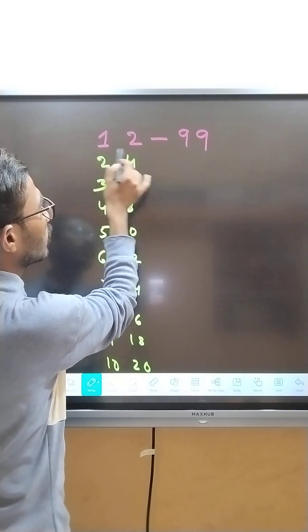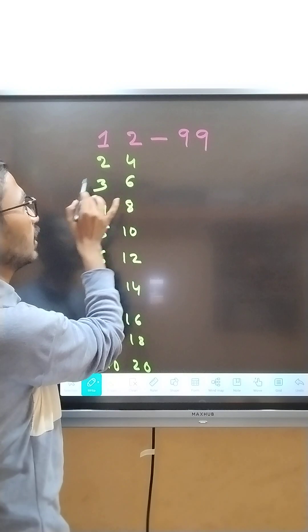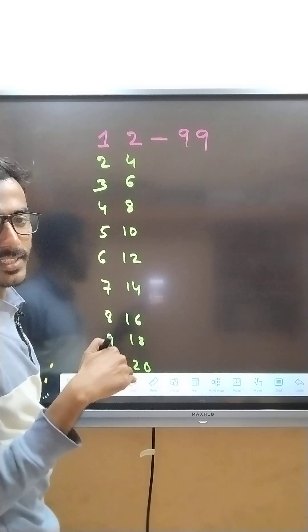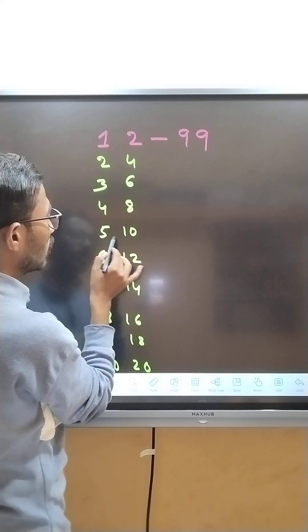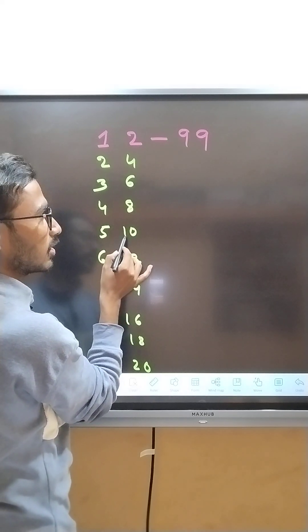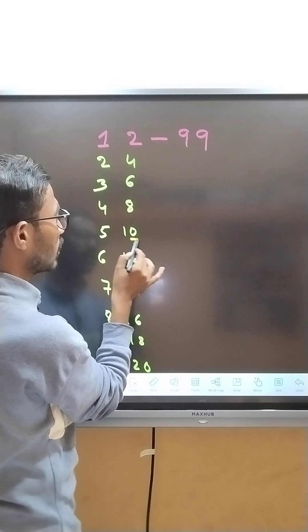This single number is 8. Now take this single number, and here the single number is 9. This number is 6. This number is 5. This number is 8.